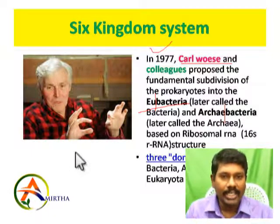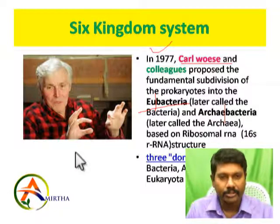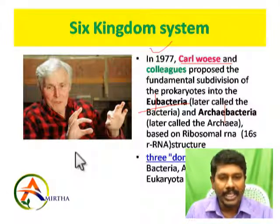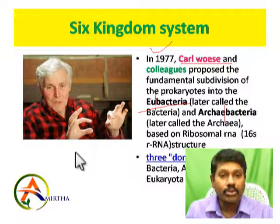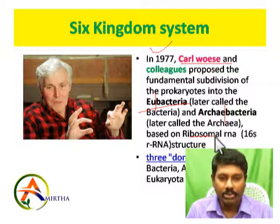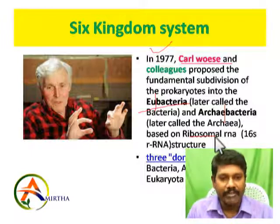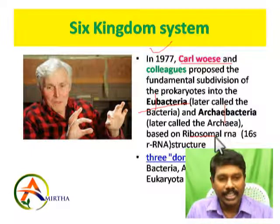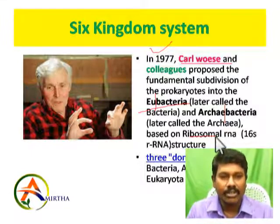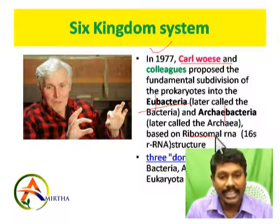Carl Woese studied the ribosomal RNA sequence. Ribosomes are involved in protein synthesis and contain various RNAs: 5S RNA, 28S RNA, 23S RNA, 18S RNA, and 16S RNA. Prokaryotes have 16S ribosomal RNA, while eukaryotes have 18S ribosomal RNA.